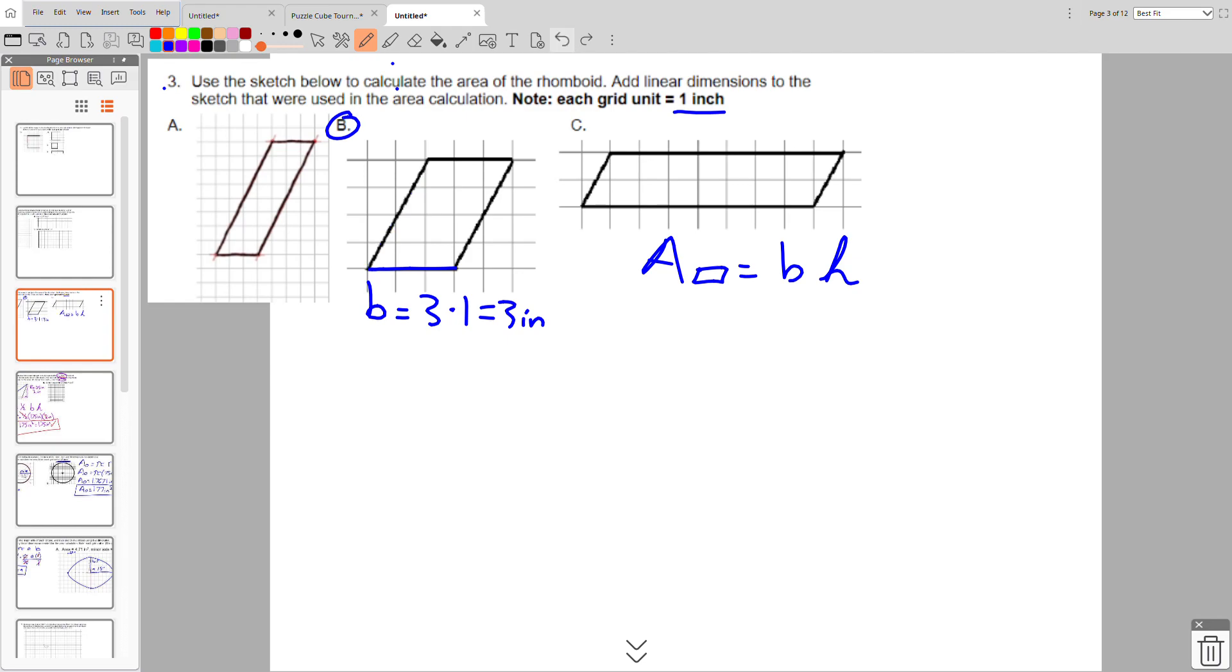So we need to find our height, which is in the form of the altitude, where the height is always perpendicular to the base. And this is four blocks, so I'm going to have h is equal to four inches.